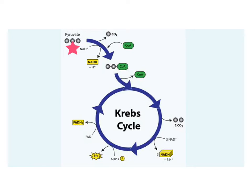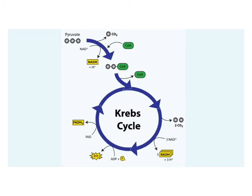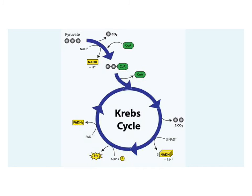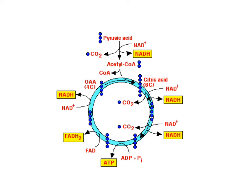Here's an overview of the process. We have pyruvate, which is three carbons. In the first step, Coenzyme A joins with the pyruvate, releases a carbon dioxide molecule, and generates acetyl-CoA. It then enters the Krebs cycle, where a whole lot of steps occur. Two more carbon dioxides come off. We generate three NADHs, another ATP — that should be two — and FADH2 as well.